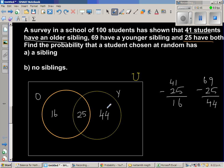What does this 44 mean? This is for the students who have only younger siblings. They don't have older siblings. So this 25 is for students who have older and younger siblings.